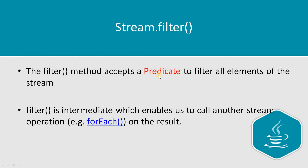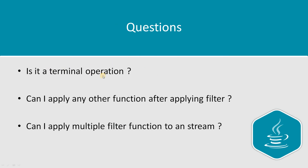The filter method accepts a predicate, which is a predefined functional interface in Java, to filter out the elements. Filter is an intermediate operation, meaning it gives you another stream as a result so that you can call another function on it. It is a non-terminal operation, so the result is going to be a filtered stream. Can I apply any other function after applying filter? Yes, you can, because filter is an intermediate operation and produces another stream as a result.